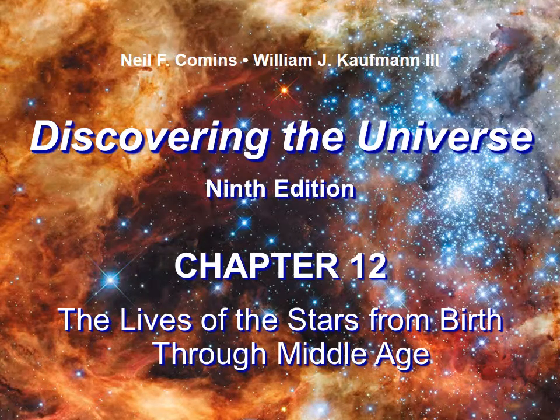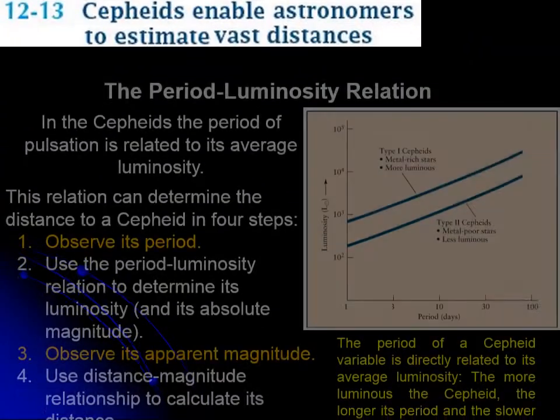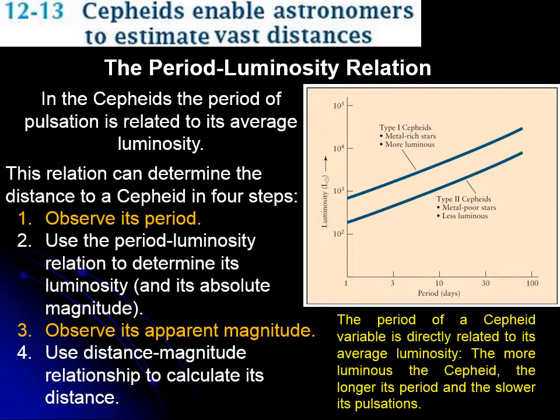This is the video lecture for sections 13 and 14 of chapter 12. We continue looking at the evolution of the life of a star. We're talking about variable stars in the previous section and here we look specifically at the Cepheids.